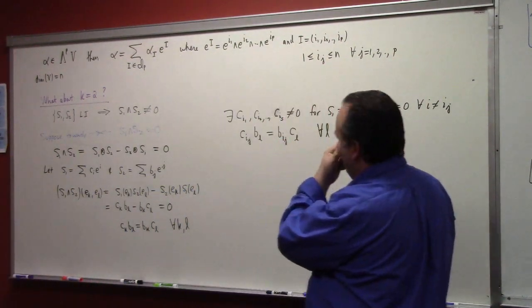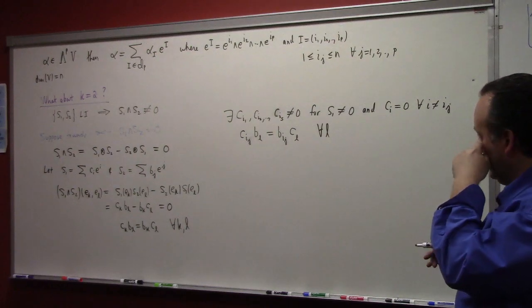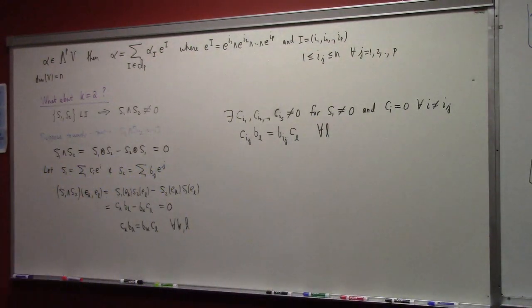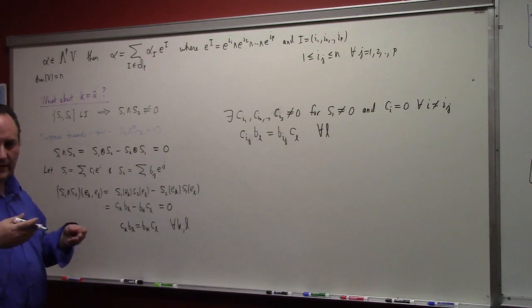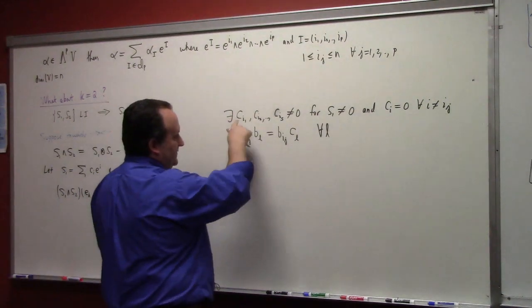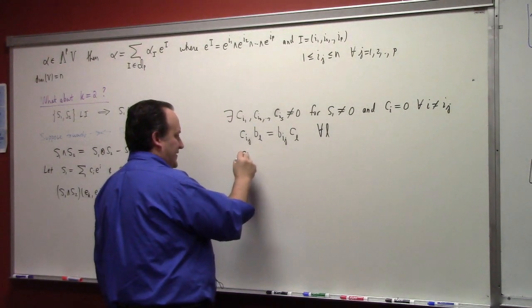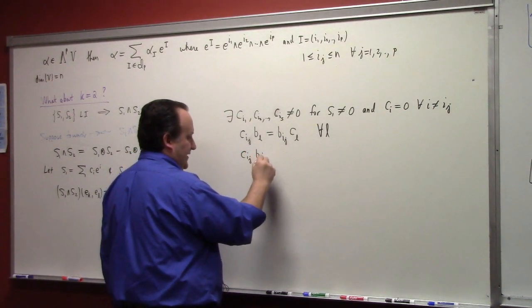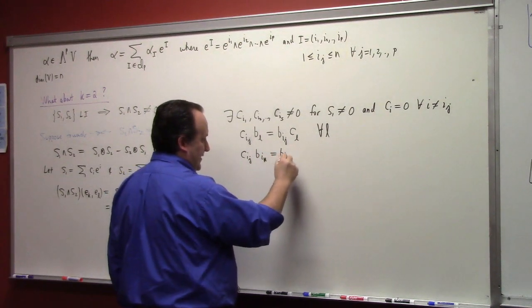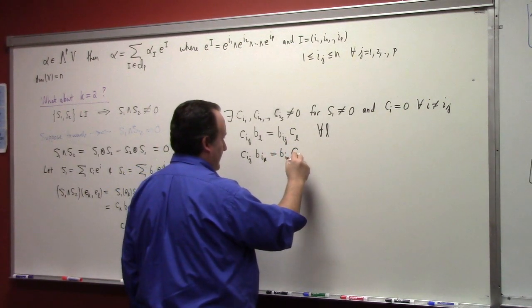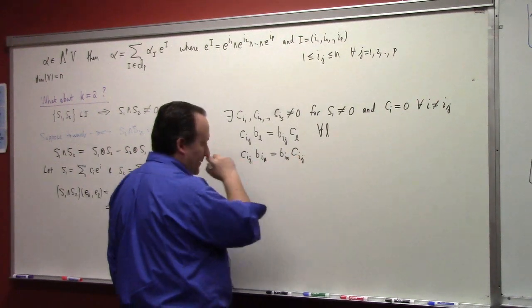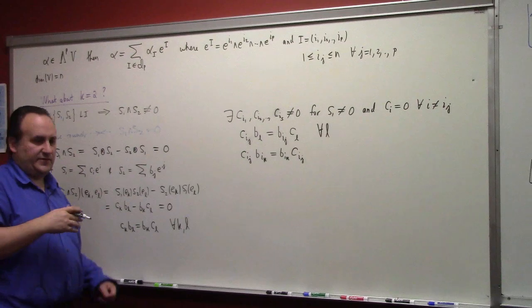So that's true for all L. In particular, it's true for the set of indices which the C's are nonzero for, right? So it gives you that Cij B sub ik is equal to Bik Cij, right? And those are all nonzero.